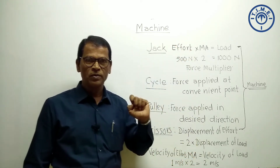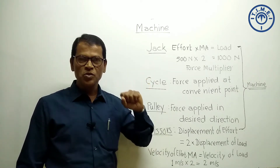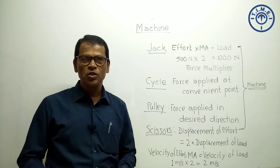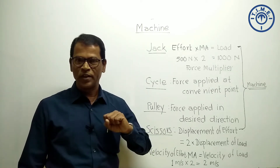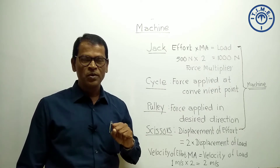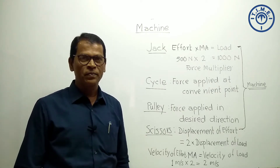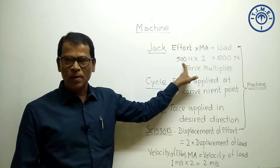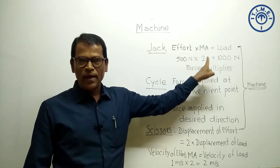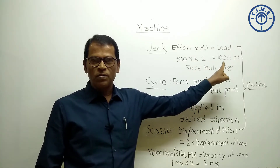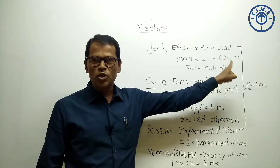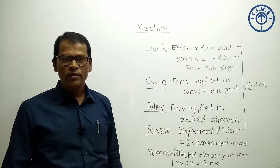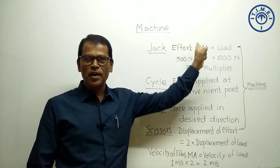Now we are studying one by one to define machine. For example, jack. Jack is used to lift up the car. The car is pulled by gravitational force downward; to oppose this resistive force, we apply force in the upward direction. But it is not possible for a normal person, so a driver uses a jack. By applying a small effort of 500 Newton, it is multiplied by the mechanical advantage and a car of weight 1000 Newton is lifted up. So this jack works as a force multiplier — the force of 500 Newton is multiplied by mechanical advantage 2.